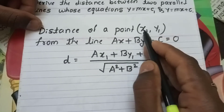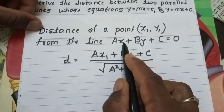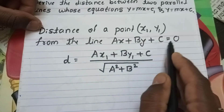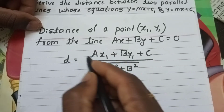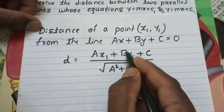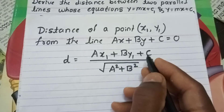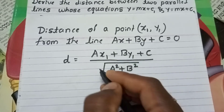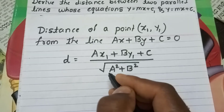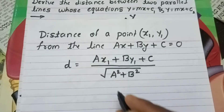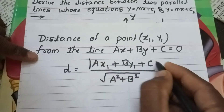The distance of a point (x1, y1) from the line ax + by + c = 0 is given by the formula: d = |ax1 + by1 + c| divided by the square root of a² + b².